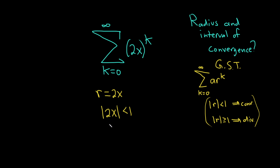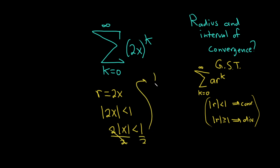We can break this up into two pieces. You can take the absolute value of 2 and the absolute value of x, but the absolute value of 2 is just 2, so this is 2 times the absolute value of x. You can always pull out positive numbers outside of absolute values. Then we divide by 2, and we end up with the absolute value of x less than 1 half.